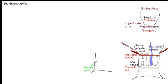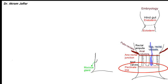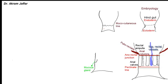If the anal membrane fails to break down during development, this results in imperforate anus. Naturally, it breaks down, and the anal canal is perforated so that the ectoderm and endoderm parts become continuous. The remains of the anal membrane are indicated by the pectinate line, also called the mucocutaneous line, because the epithelium above it is columnar, similar to that of the rectum, while below it is stratified squamous epithelium.